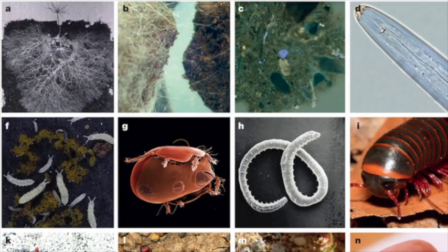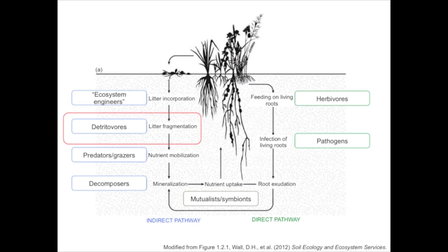Soil fauna represent a highly diverse group of organisms with many different functional roles. Some soil fauna graze on dead plant material, fragmenting it into smaller pieces so that it can be incorporated into the soil where microbes can further decompose it. Others prey on soil microbes with knock-on effects for rates of soil organic matter decomposition and nutrient cycling.